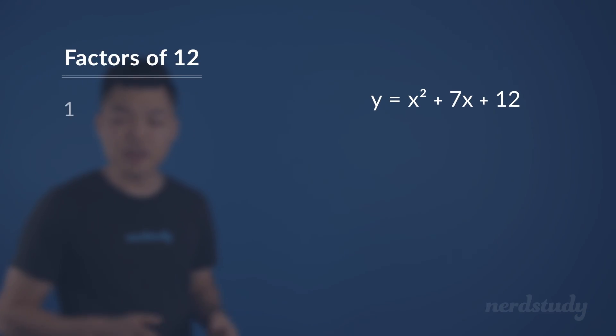Alright, so we've got 1, 2, 3, 4, 6, and 12 as our factors of 12.